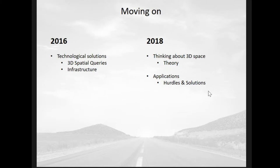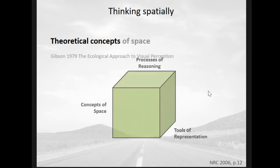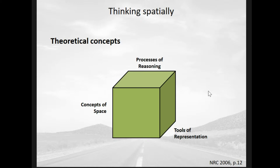When we're looking at 3D space we should be thinking spatially. This is a concept which James Gibson, the famous psychologist, came up with — published in 1979 in 'The Ecological Approach to Visual Perception.' As part of this there were three main concepts: concepts of space, processes of reasoning, and tools of representation.